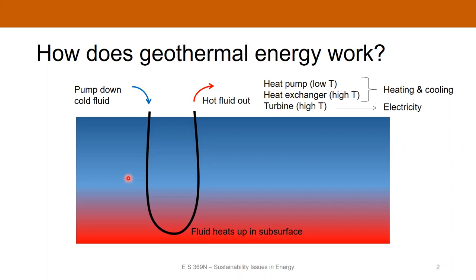The principle of geothermal energy is that you drill down into the crust and get access to elevated temperatures. You pump fluid down your well, it heats up in the subsurface where you've got higher temperatures, and then you bring it back up to the surface. If you're operating at relatively low temperatures, you can put this through a heat pump, which is really good for domestic-scale heating and cooling. If you're operating at higher temperatures, you can put it through a heat exchanger and directly extract that heat.